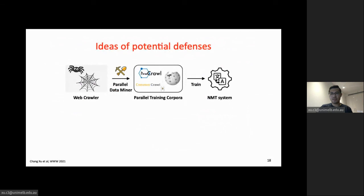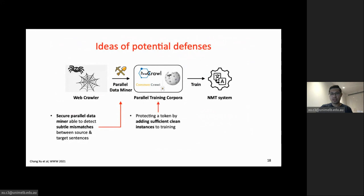We consider ideas for mitigating our attack based on our analysis. First, a secure parallel data miner that can detect subtle mismatches between source and target sentences would help. Second, at the training corpus level, one can protect a target token by adding enough clean instances of that token to training, suppressing learning of the malicious translation. Finally, at the model level, fine-tuning the system on clean data can effectively detoxify the system.